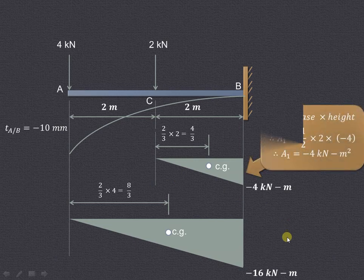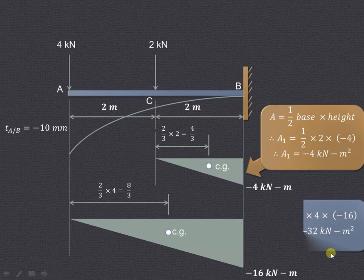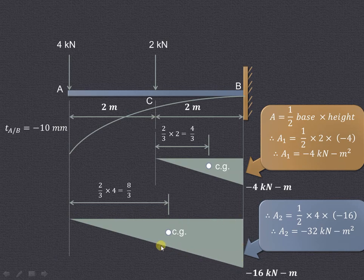We have considered the two loads separately and drawn two separate bending moment diagrams. The area of the first triangle A1 is (1/2) × base × height = (1/2) × 2 × (−4) = −4 kN·m². The area of the second larger triangle A2, formed due to the bending moment of the 4 kN force, is (1/2) × 4 × (−16) = −32 kN·m².